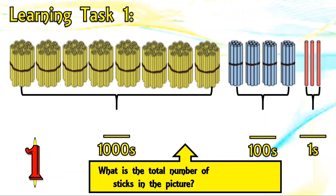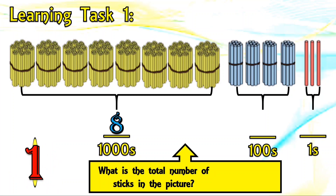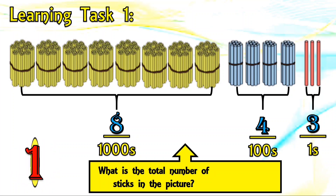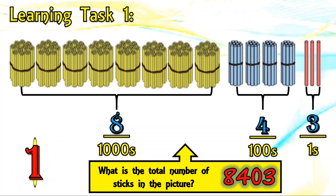How many thousands, hundreds, and ones do we have in the picture? Right, we have eight thousands. Yes, we have four hundreds. And finally, we have three ones. The total number of sticks in the picture is 8,403.